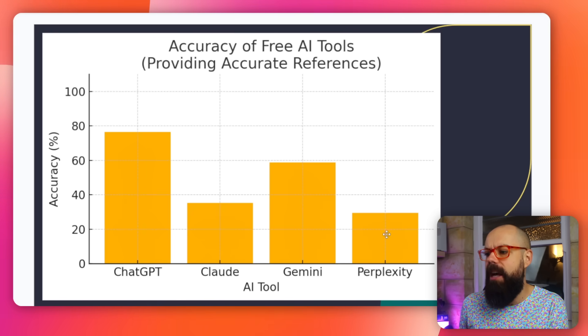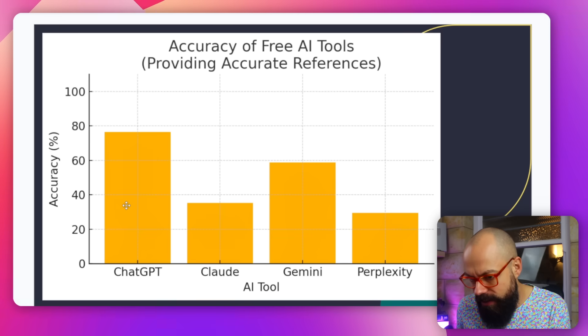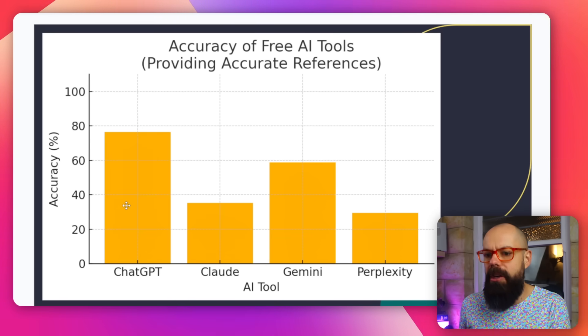Perplexity overall performed the worst and ChatGPT performed the best. All of these prompts across all these different things were really challenging and time-consuming, but an important stress test for these large language models — to make sure they're not just lying to you, which we cannot have if we're going to be using these for academia and research.